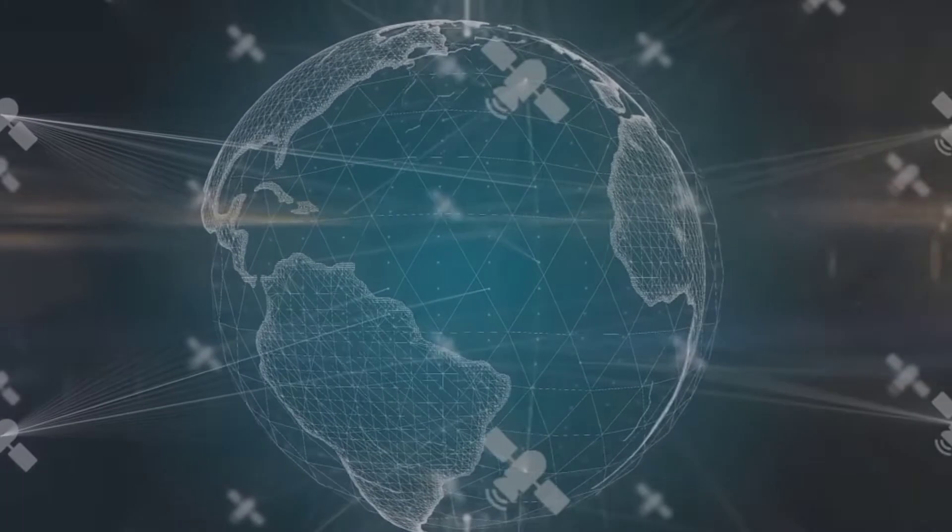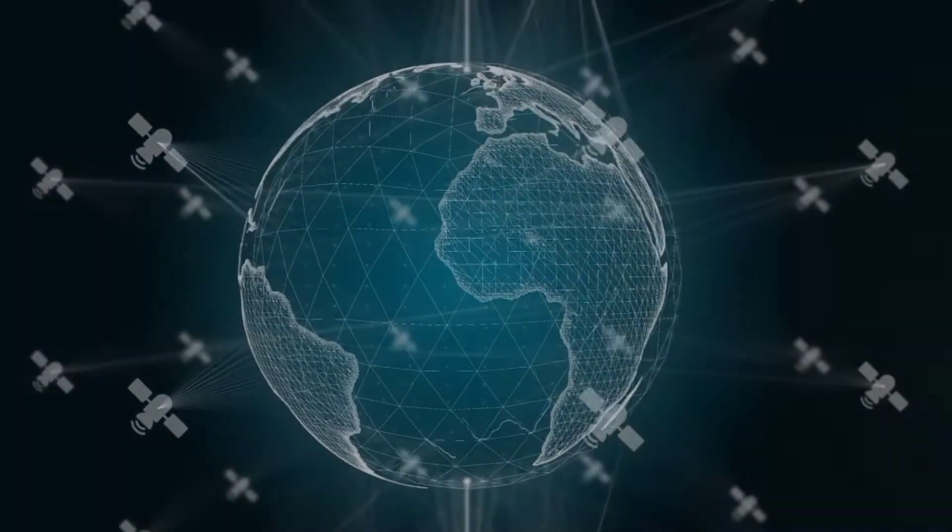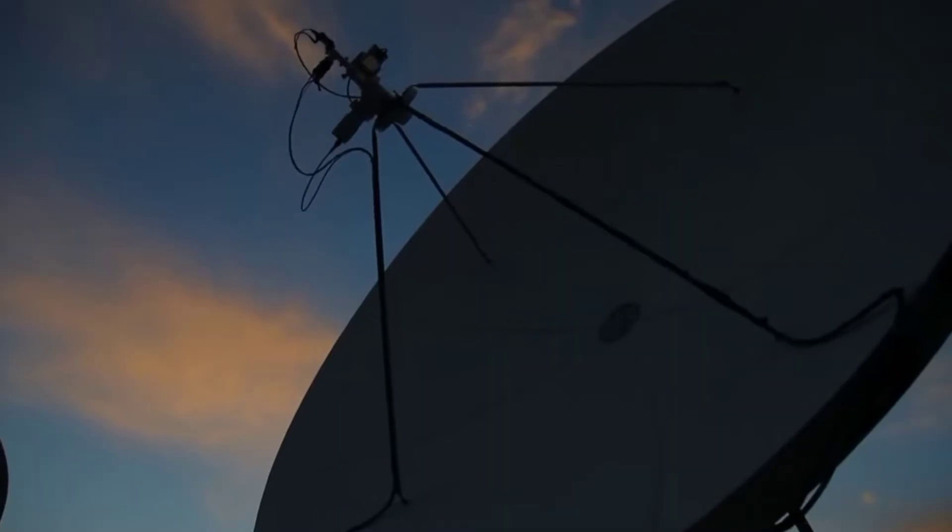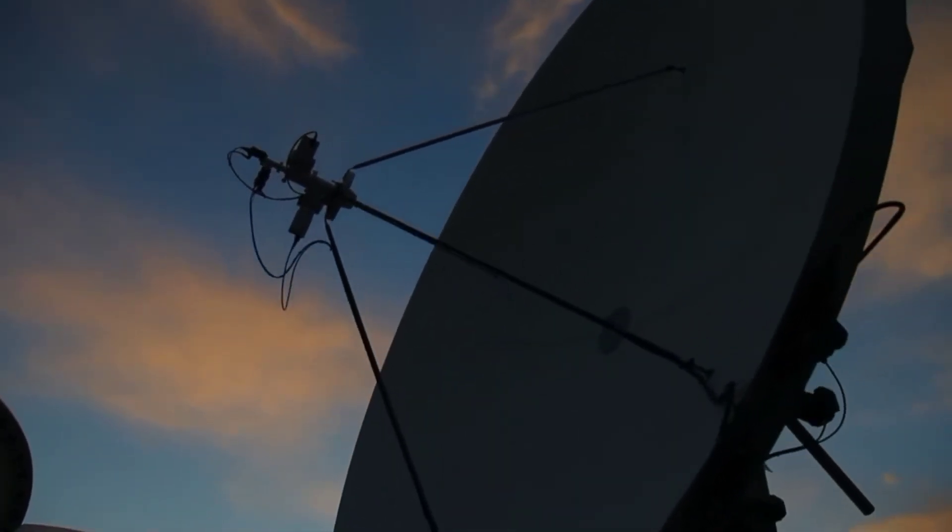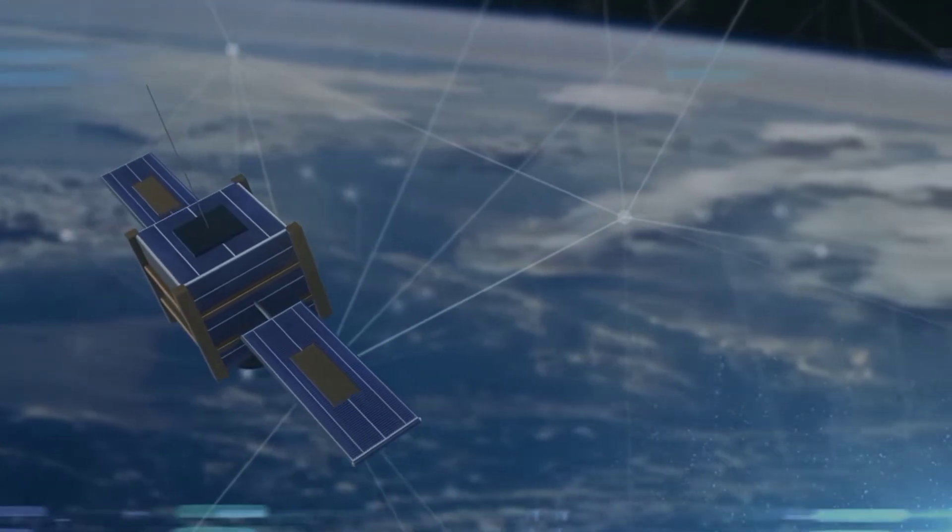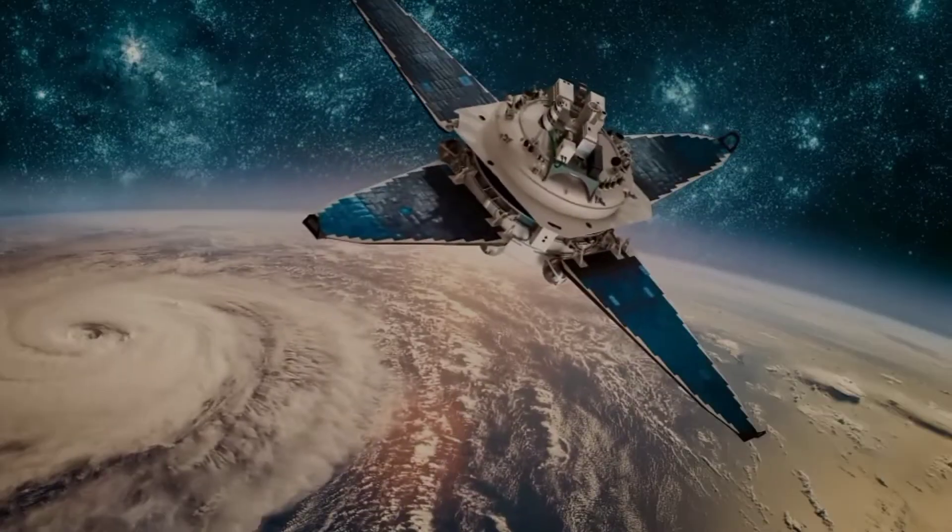Planned as a constellation varying in size from 300 to more than 500 satellites in low-Earth orbit. Once completed, 95% of Earth will have at least two satellites in view at any given time, while 99% of the planet will have at least one satellite in view at any given time.